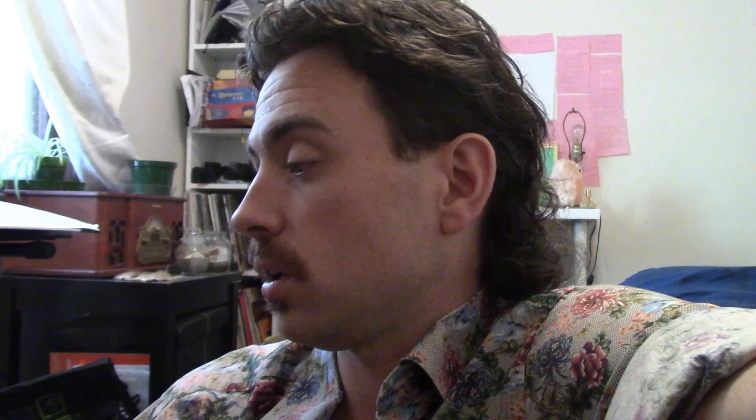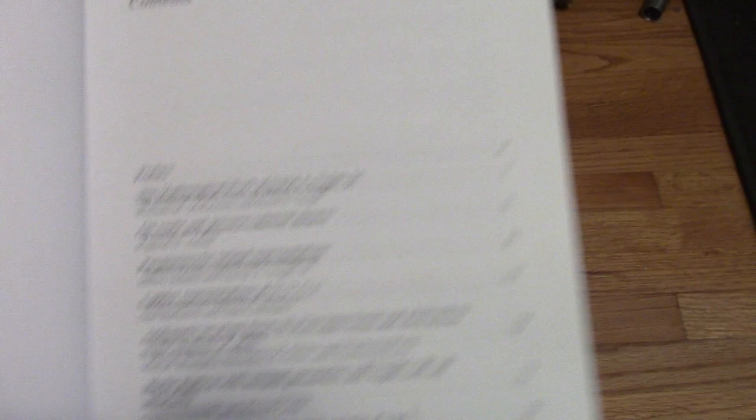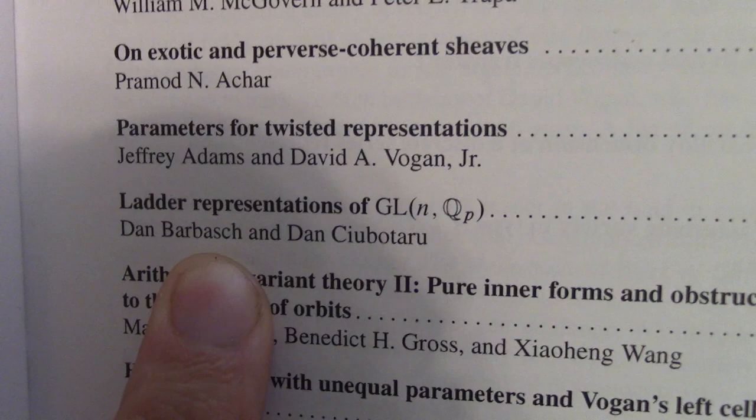I just made another video about an article that came up in this book — Representations of Reductive Groups. This is a book published in honor of David Vogan, who has done a bunch of big stuff in Langlands. Monica Nevins, who is on there as well, was organizing the CMS session together with my supervisor. That article I was looking at is Barbash and Ciubotaru's paper on ladder representations of GLN(Qp), which we were just talking about.